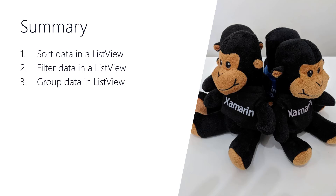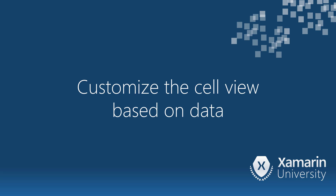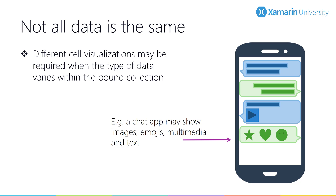In objective three, we saw how to add grouping support to our ListView. In this next section, we'll see how to change the cell style based on the data in each row. When displaying collections of data, we may want to change our appearance depending on the content — different values based on properties, or a collection storing different types derived from a common base class. For example, in a chat application we could change the cell visualization based on who sent the message or the message content.